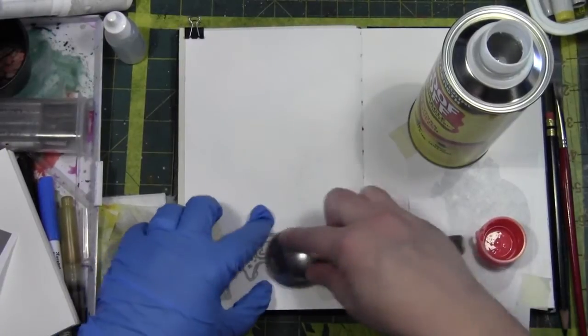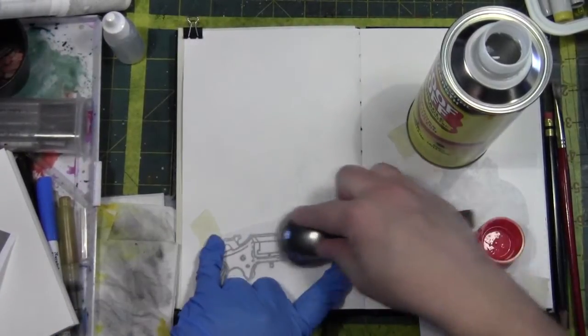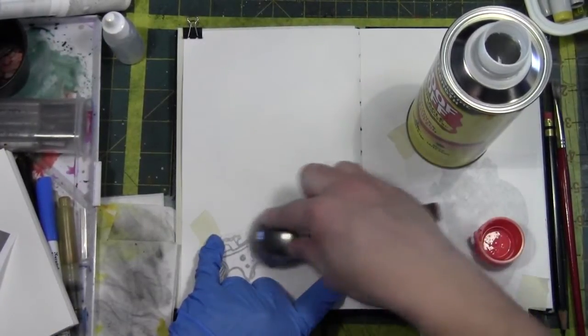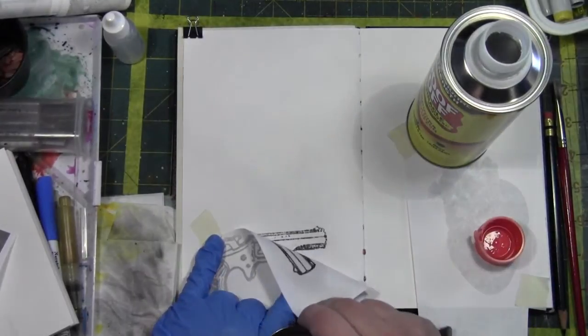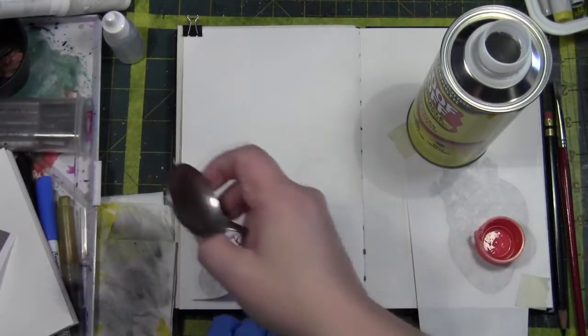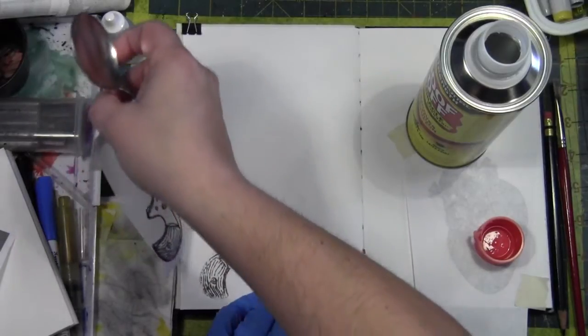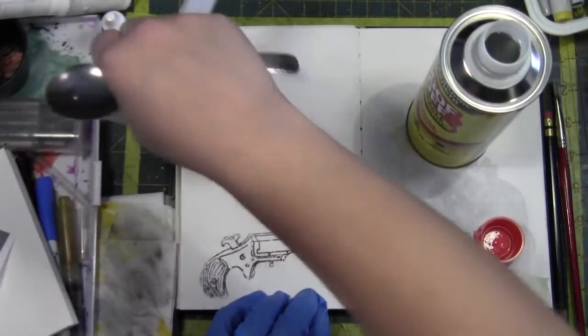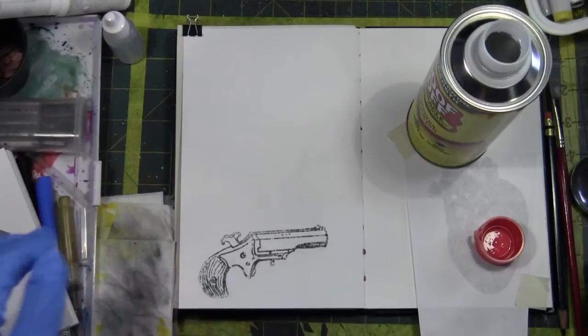Sometimes if you flip the spoon over, you can get more pressure and a better transfer. There we go. So you're not going to get a perfect printing. You're going to get an imperfect but pretty good looking transfer.